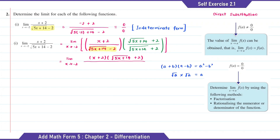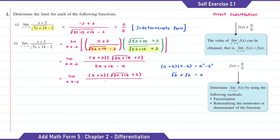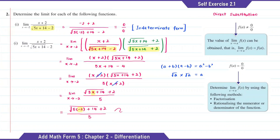When we expand the denominator, we get 5x plus 14 minus 4, so 5x plus 10. So here we can factorize the numerator as 5(x plus 2). So now we can cancel the x plus 2. So now if we substitute x with negative 2, the answer is equal to 4 over 5.